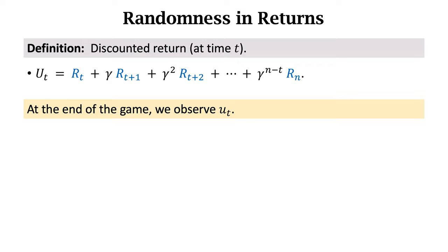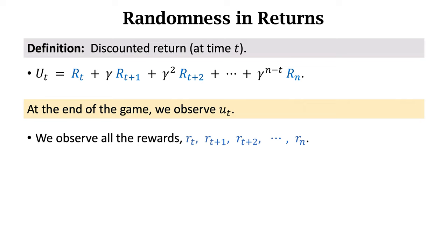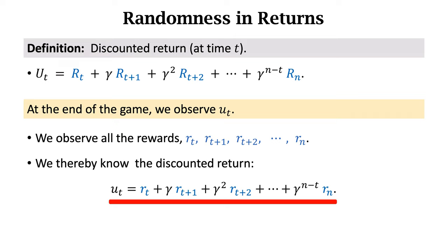Let's study the randomness in return UT. At the end of the game, we observe the return. Since UT is observed, we denote it by lowercase ut. Upon finishing the game, we observe all the rewards, denoted by lowercase rt to rn. We can thereby compute the return using this equation: taking the weighted sum of observed rewards, we get the return ut.